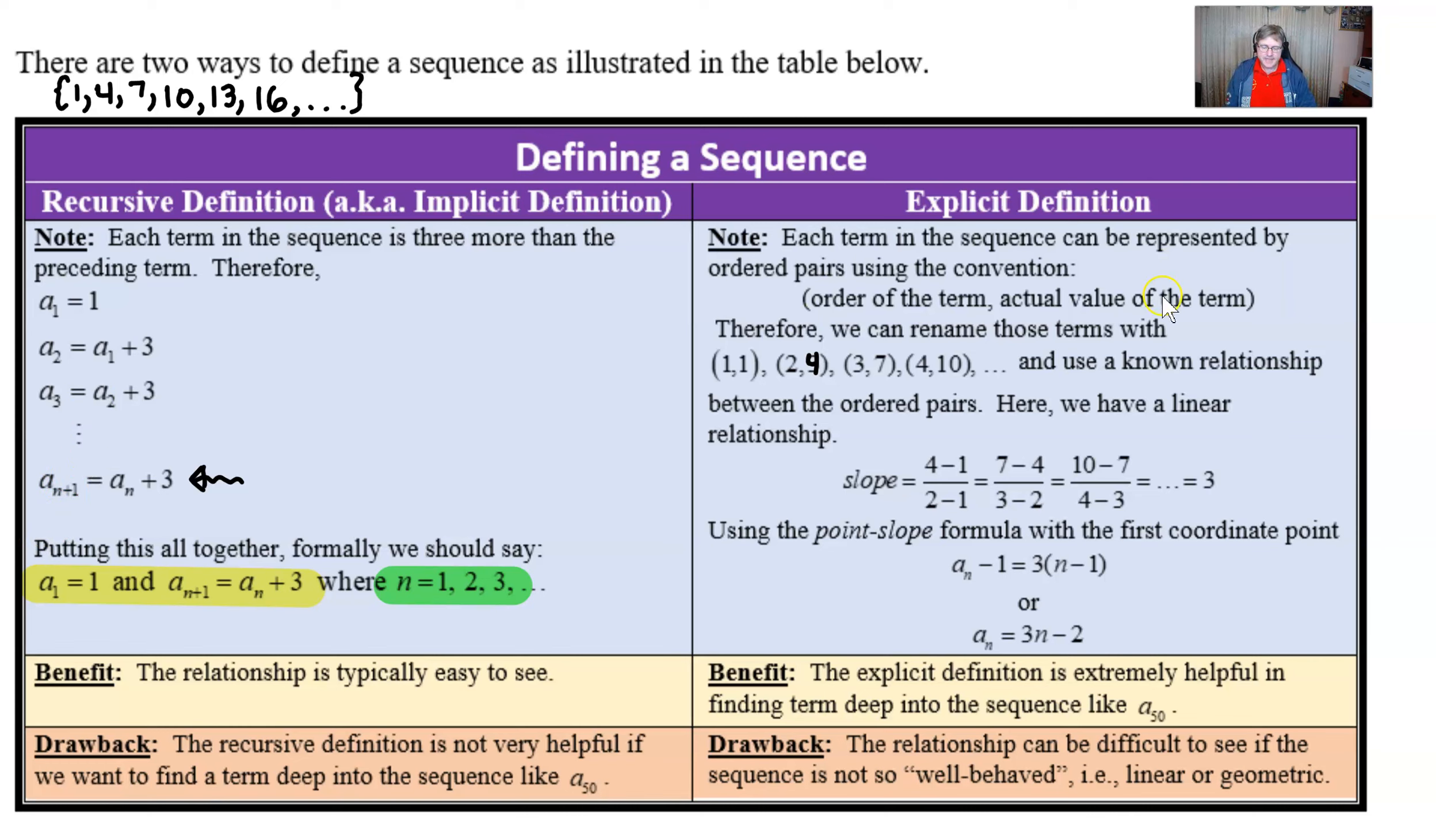Now, the benefit of the explicit is that it will do a great job of figuring out what is the 50th term. You just enter 50 in for n, and I can tell you right now that the answer is 148. That's great.